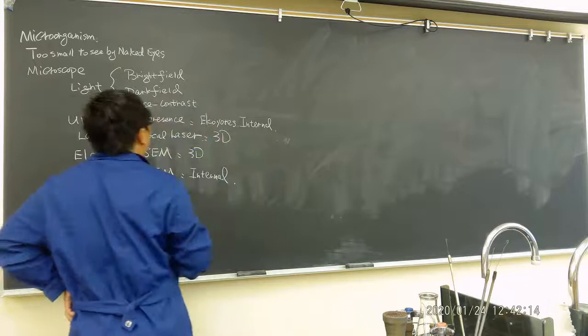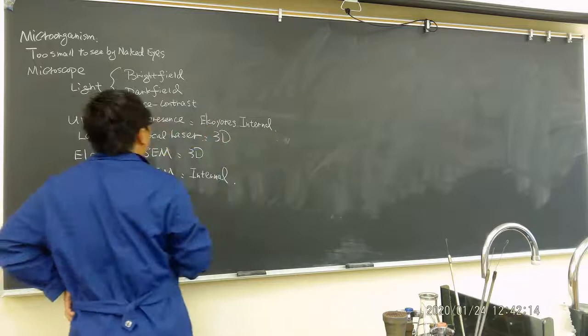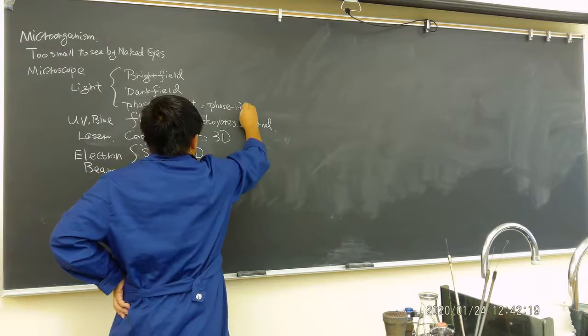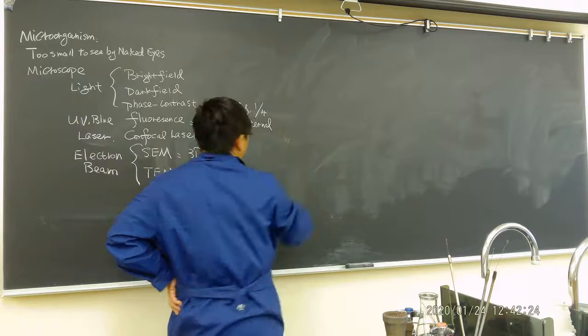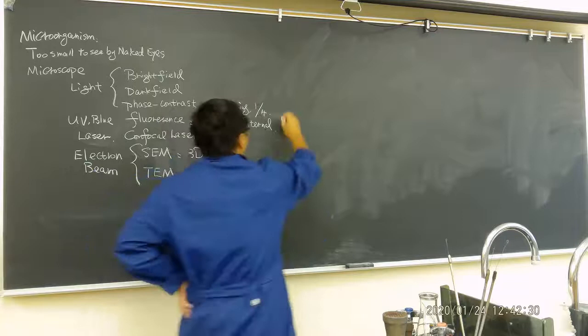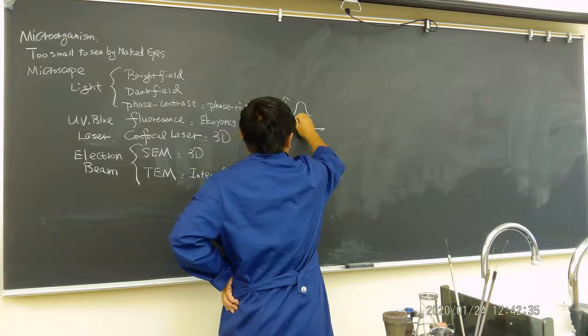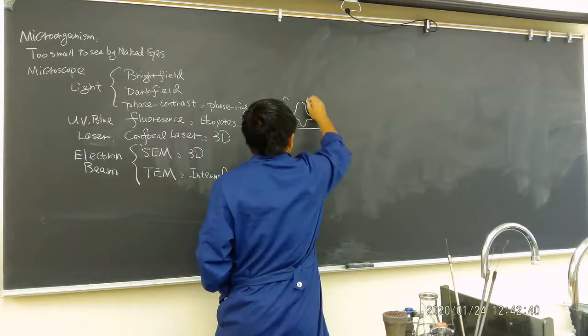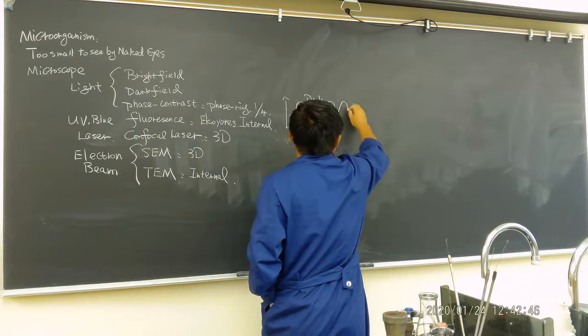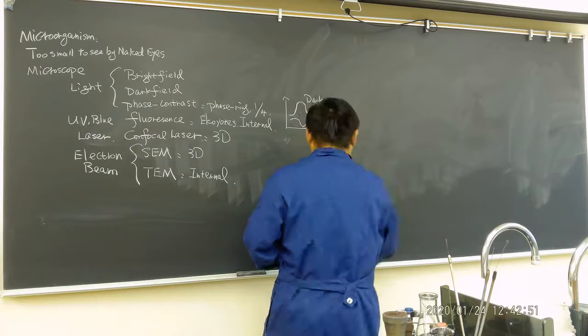Therefore we have SEM, scanning electron microscope and transmission electron microscope. This is usually look at the surface, the 3D images for surface. And this is for internal. Confocal laser scanning microscope also can see 3D images. Fluorescence, usually we are using for eukaryotes and we can see the internal structure also. Phase contrast microscope - the key is the phase ring.